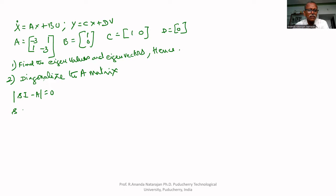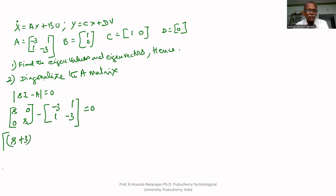sI is the matrix with s on the diagonal: s, 0, 0, s. So sI minus A, where A is minus 3, 1, 1, minus 3, gives us the matrix s plus 3, minus 1, minus 1, s plus 3, equal to zero.